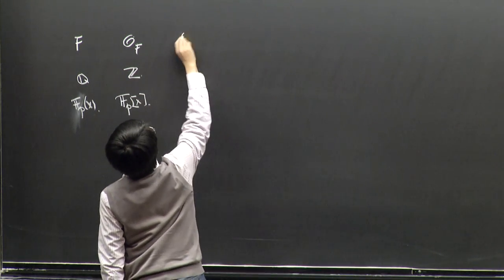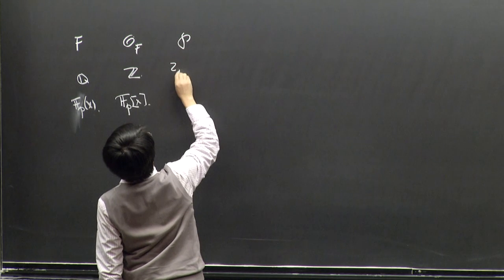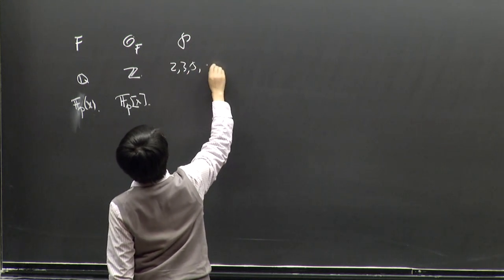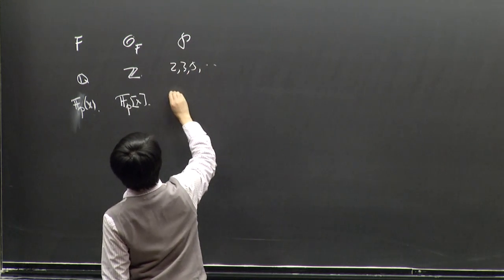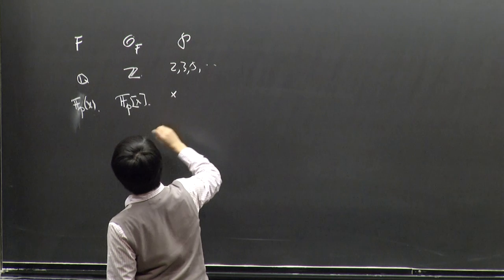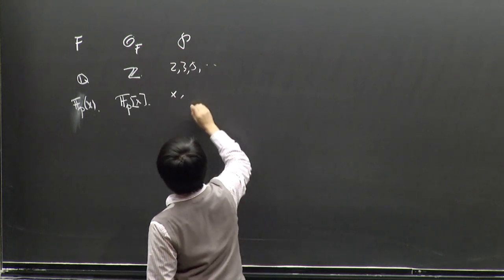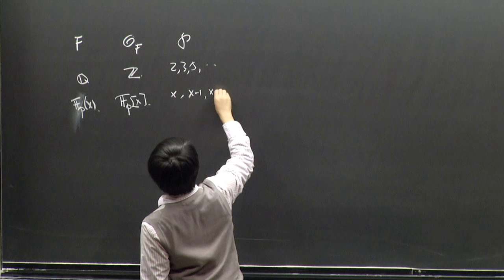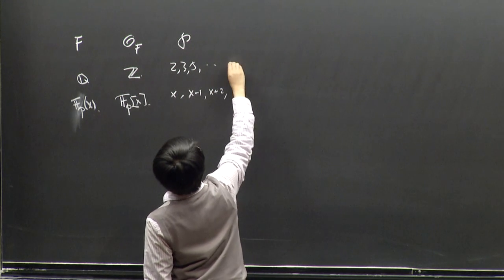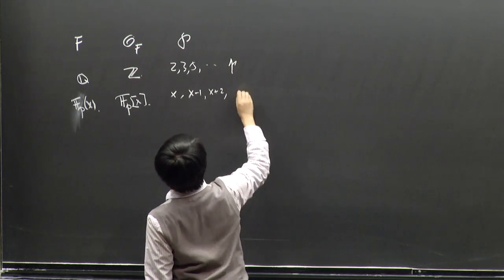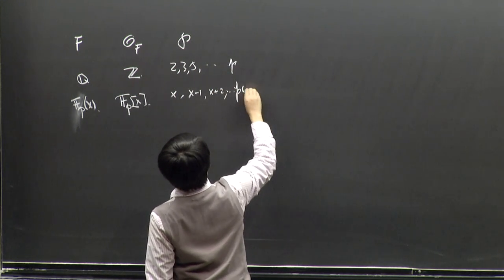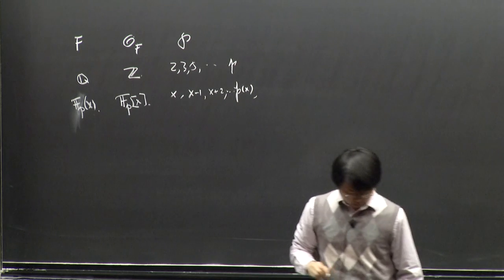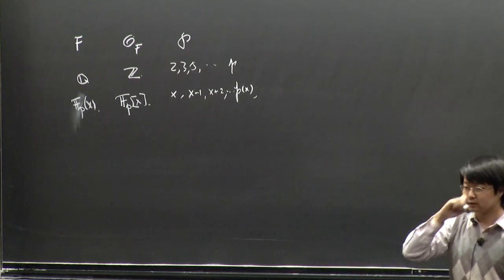We have primes 2, 3, 5, and here we have irreducible polynomials x, x+1, x−1, x+2. Or generally, you have a prime p, and here it's an irreducible polynomial p(x).